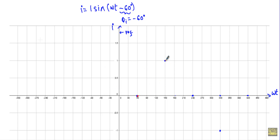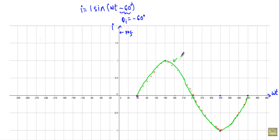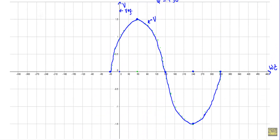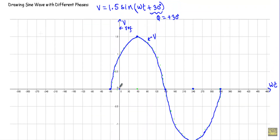The four points are: zero, positive maximum, zero, negative maximum. Joining these four points gives us our alternating current waveform. So, when our initial phase is positive, you have to start the waveform from the left side of the reference axis.